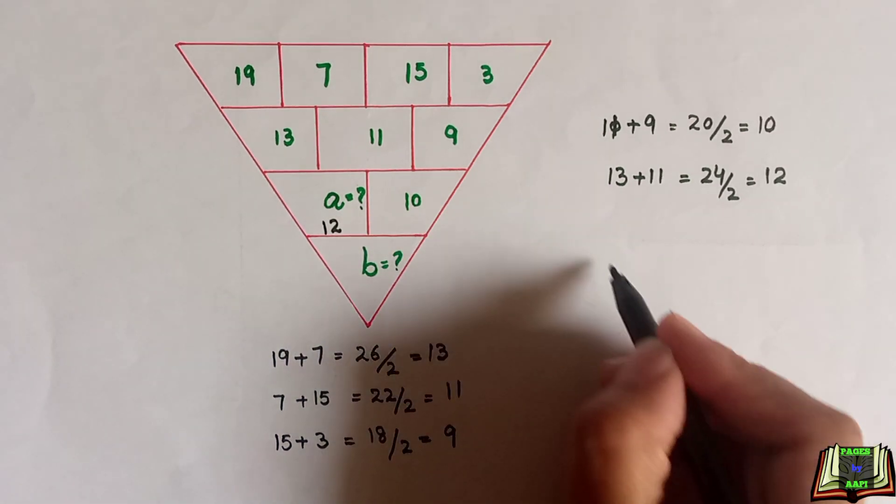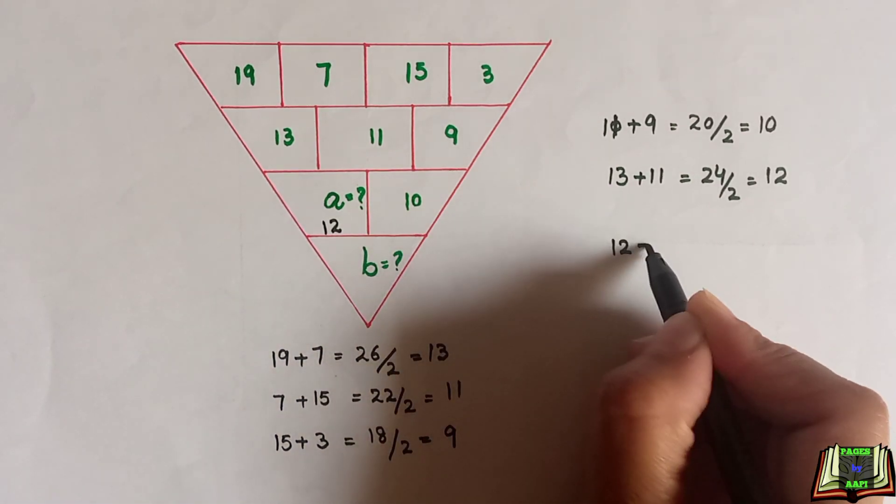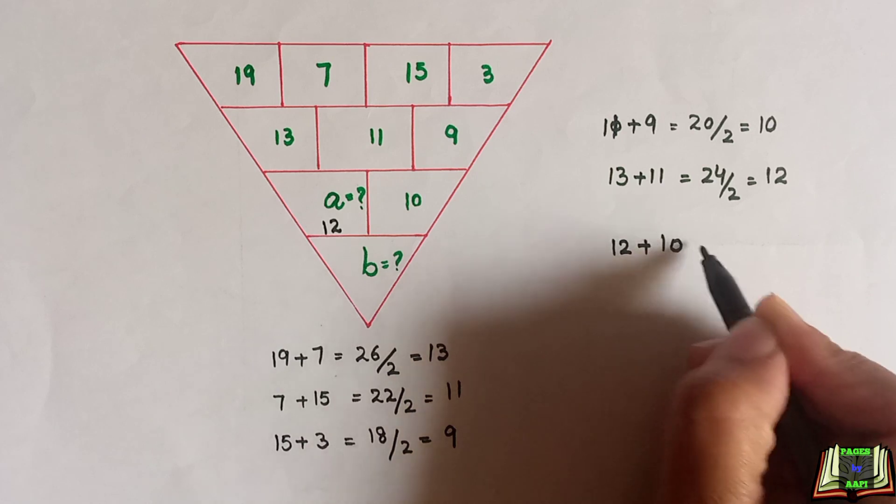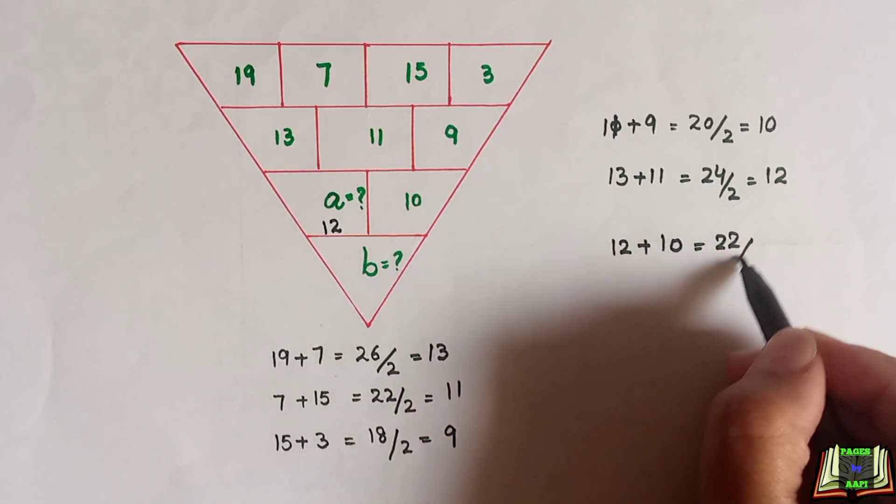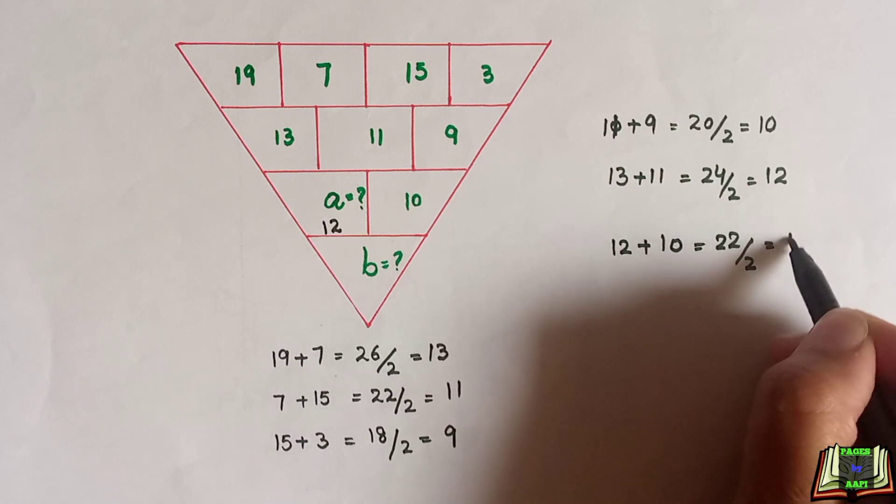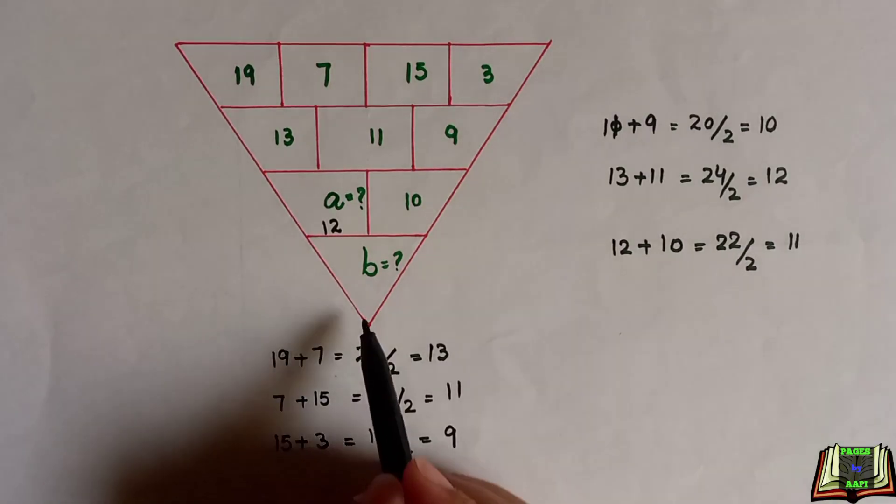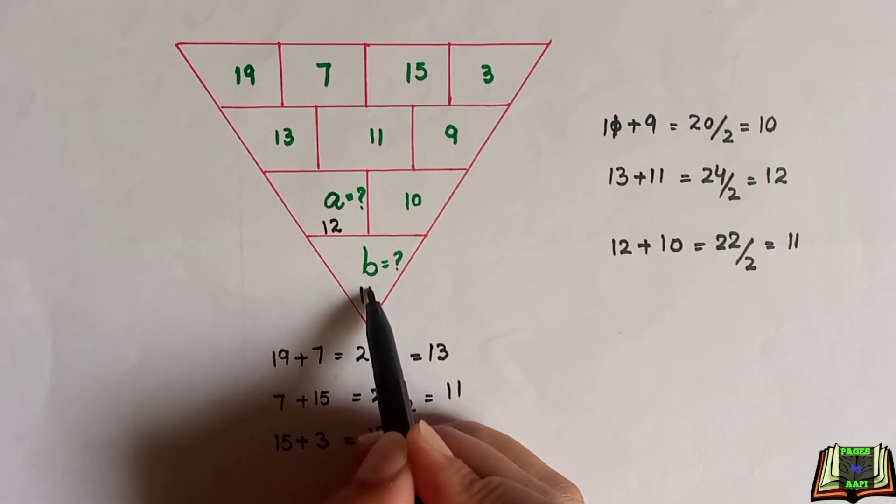Now to get the value of b, we will add these two numbers: 12 plus 10, which equals 22. Then we divide this sum by 2, which equals 11. So we got the value of b, which is equal to 11.